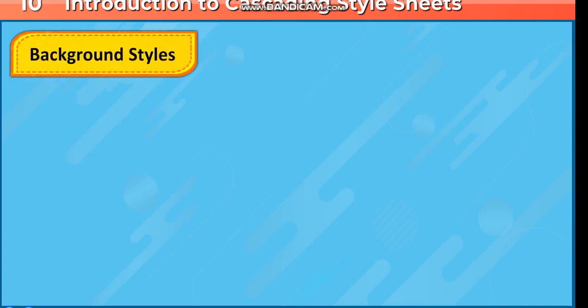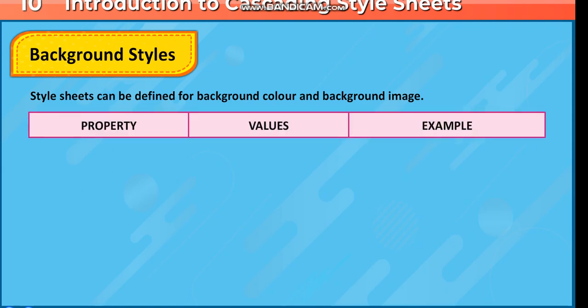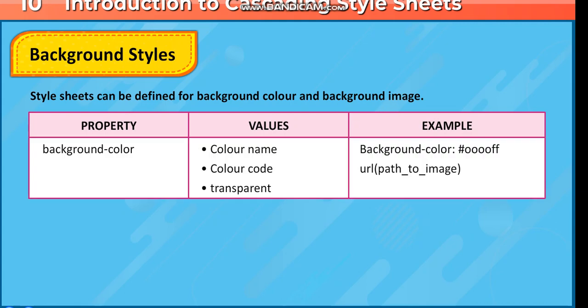Background styles. Style sheets can be defined for background color and background image. The background-color property accepts values such as a color name, a color code, or transparent.